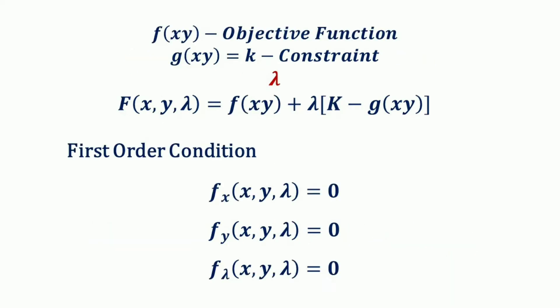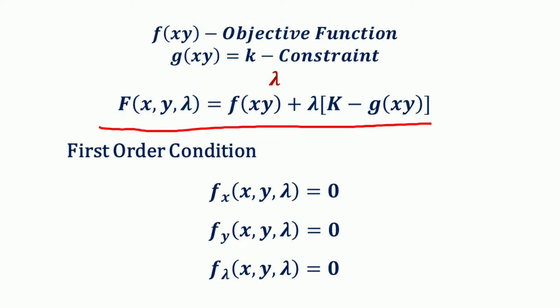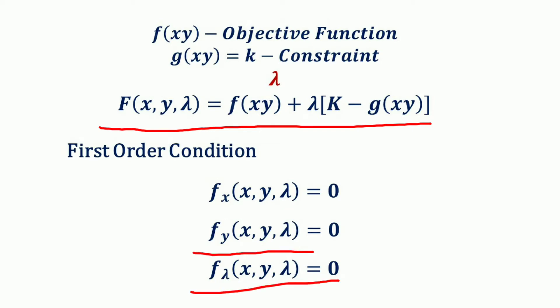In order to find the critical values — i.e. the values of x, y, and lambda at which the function is optimized — we take the partial derivative of the Lagrangian function with respect to all three independent variables: with respect to x, with respect to y, and with respect to lambda, and then solve simultaneously.